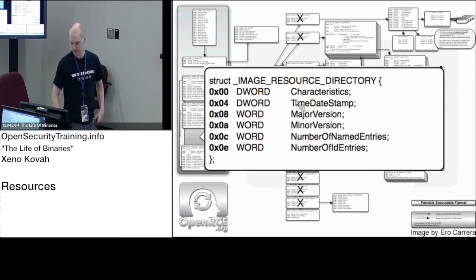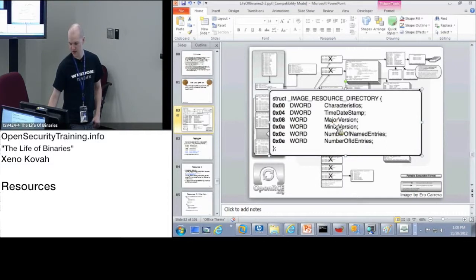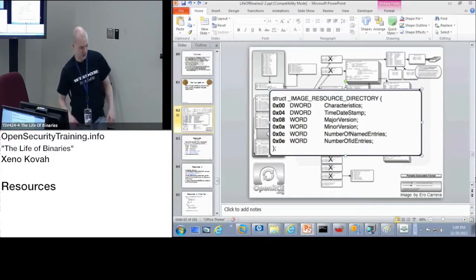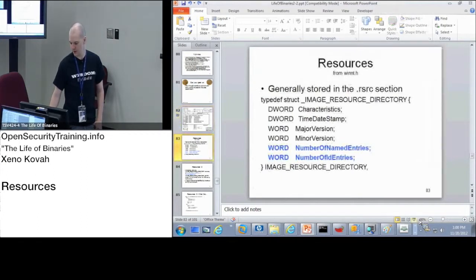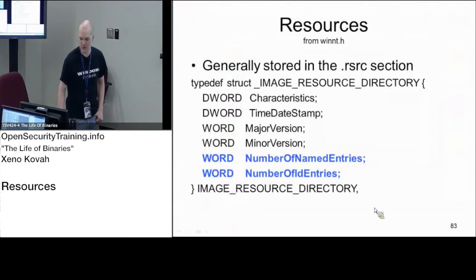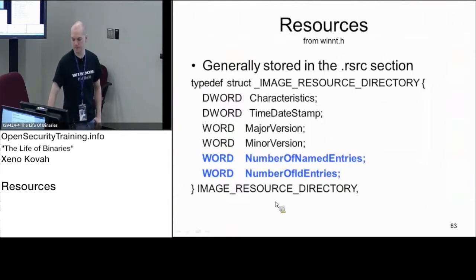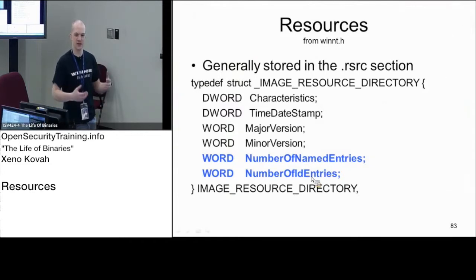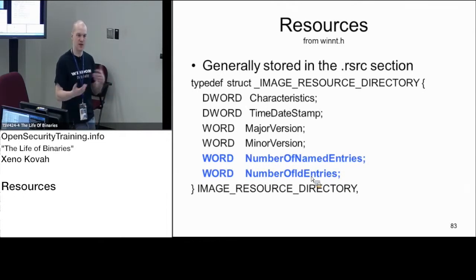From the data directory there's a standard entry that points at the resource directory. In the resource directory, this first top-level structure — there's going to be just one of these, and then it will have an array of other data structures after it. Things we care about: there's a time-date stamp but it won't actually have anything. Things we care about are the number of named entries and the number of ID entries. Resources sometimes have an actual name and sometimes just an ID number, so you can look up things by ID or by name when accessing your resources programmatically.